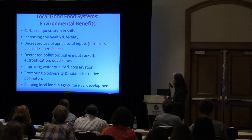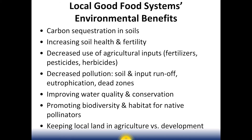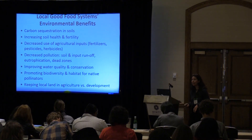In summary, local good food systems provide environmental benefits and ecosystem services: carbon sequestration in soils, increasing soil health and fertility, decreased use of agricultural inputs, decreased pollution, soil and input runoff, eutrophication, dead zones, improving water quality and conservation, promoting biodiversity and habitat for native pollinators, and keeping local land in agriculture. Thank you very much.